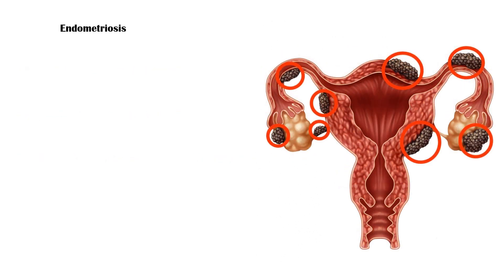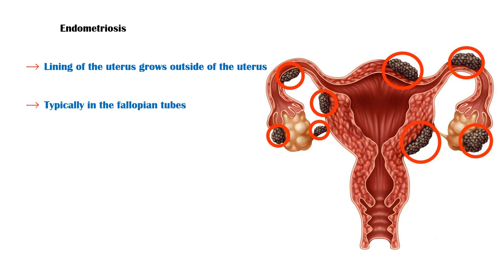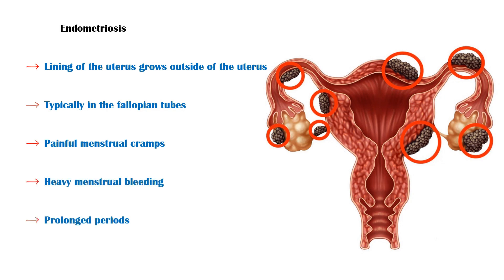Endometriosis. Endometriosis is a condition where the lining of the uterus grows outside the uterus, typically in the fallopian tubes. It causes very painful menstrual cramps, associated with heavy menstrual bleeding, prolonged periods, and bleeding between periods.